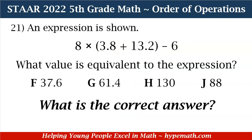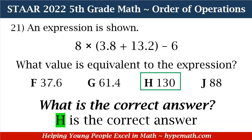All we have to do now is subtract: 136 minus 6 equals 130. So 130 is our answer. Looking at our answer choices, we find 130 at answer choice H. If you answered H, you're absolutely correct — that is our correct answer.